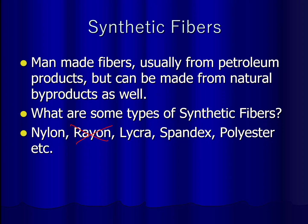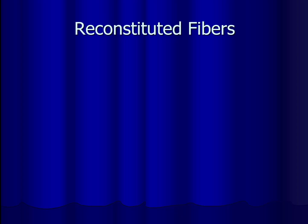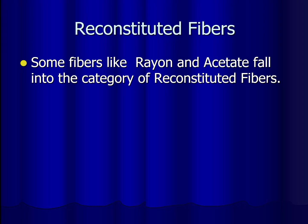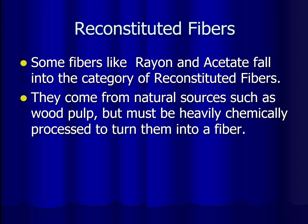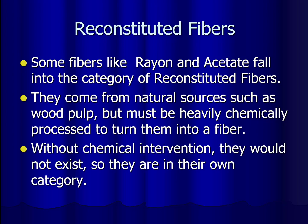Our third class of fibers are reconstituted fibers. These include rayon and acetate, and they're called reconstituted because they come from a natural source such as wood pulp but must be heavily chemically processed to turn them into a fiber. Without chemical intervention they wouldn't exist, which is why we put them in their own category — they start out as a natural material but are chemically processed to artificially produce a fiber.